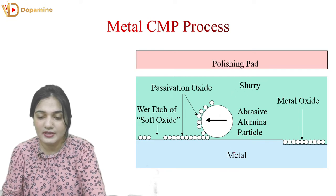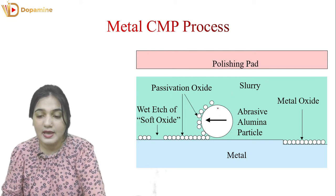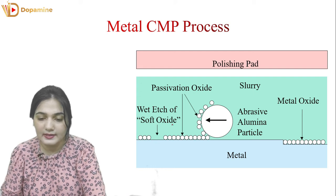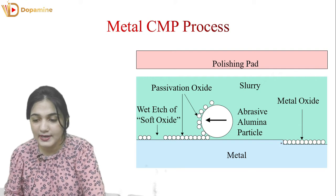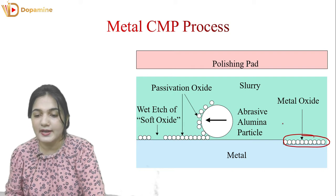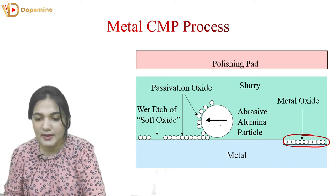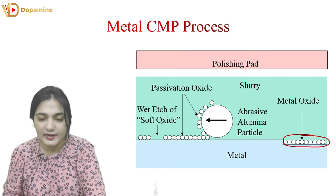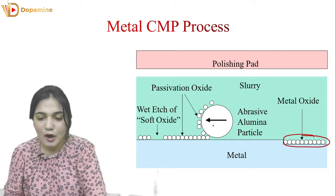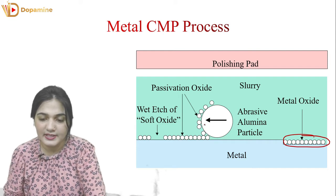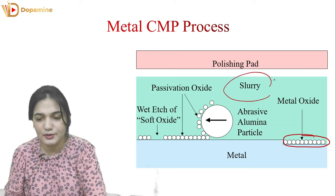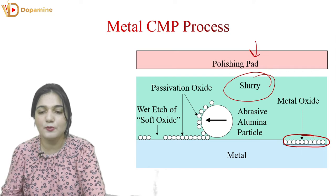Here we have the metal CMP process. We have metal with abrasive aluminum particles. Here, we have wet etching — a soft oxide is formed on top of the metal, using potassium ferricyanide. What happens is that a metal oxide is formed. Then the abrasive aluminum particles remove that oxide by etching. The slurry enables both wet etching of the soft oxide and mechanical etching with aluminum particles. We put a polishing pad on top and the process runs.